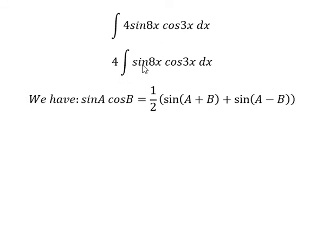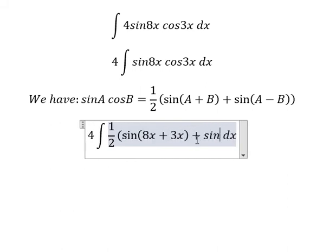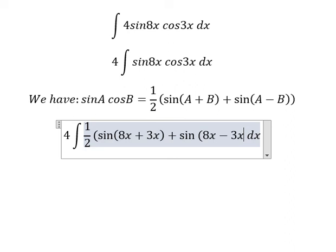So we will apply this formula for this one. We get 1 over 2 sine of 8x plus 3x plus sine of 8x minus 3x.